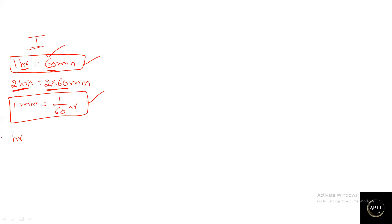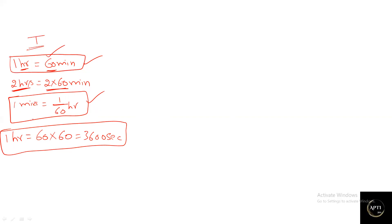One hour equals how many seconds? We know 1 hour = 60 minutes and 1 minute = 60 seconds, so 60 × 60 = 3600 seconds. Therefore, 1 hour = 3600 seconds. For most questions on Time, Speed and Distance, time will be given in minutes, hours, or seconds. One hour = 60 minutes; hours to minutes: multiply by 60; minutes to hours: divide by 60.